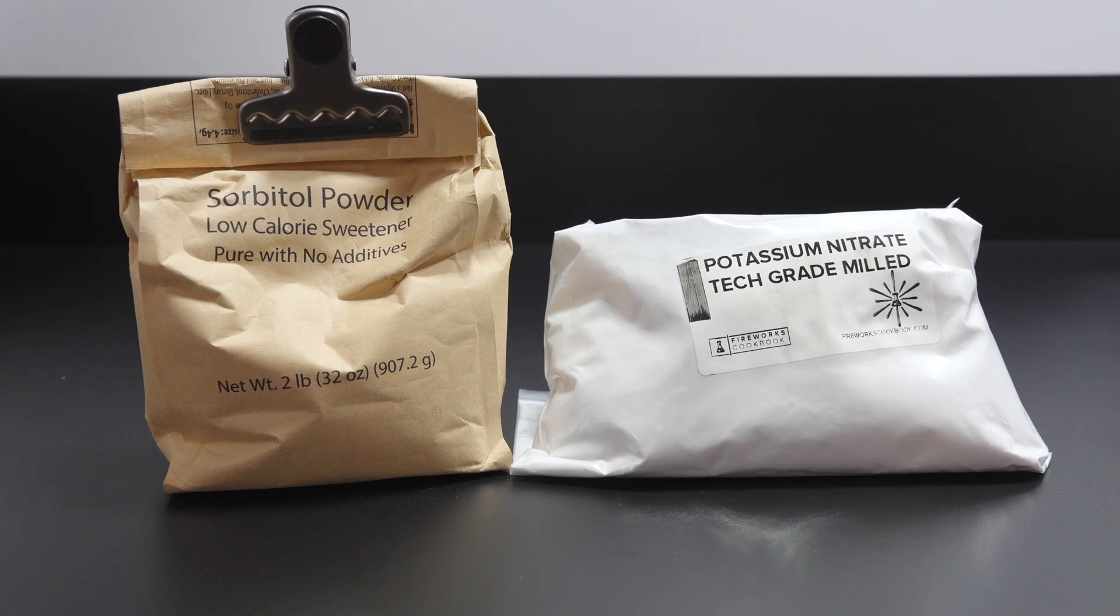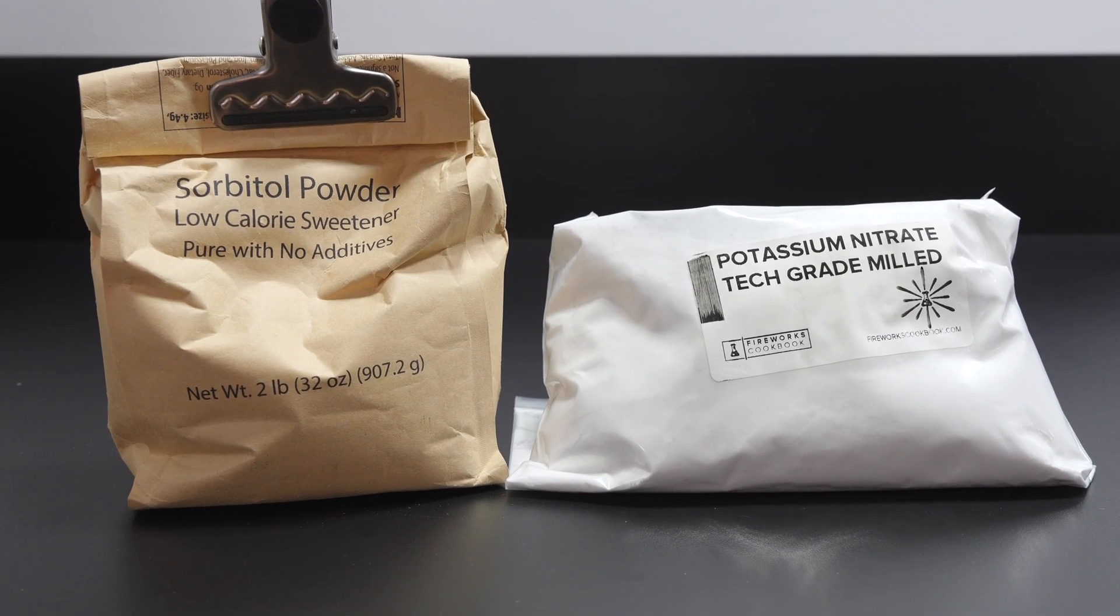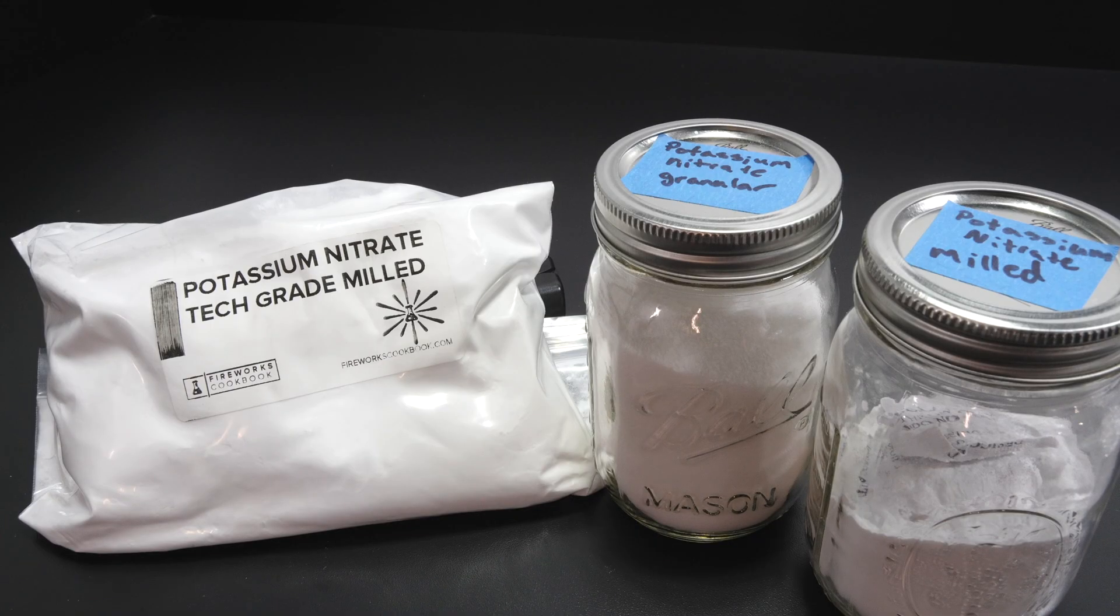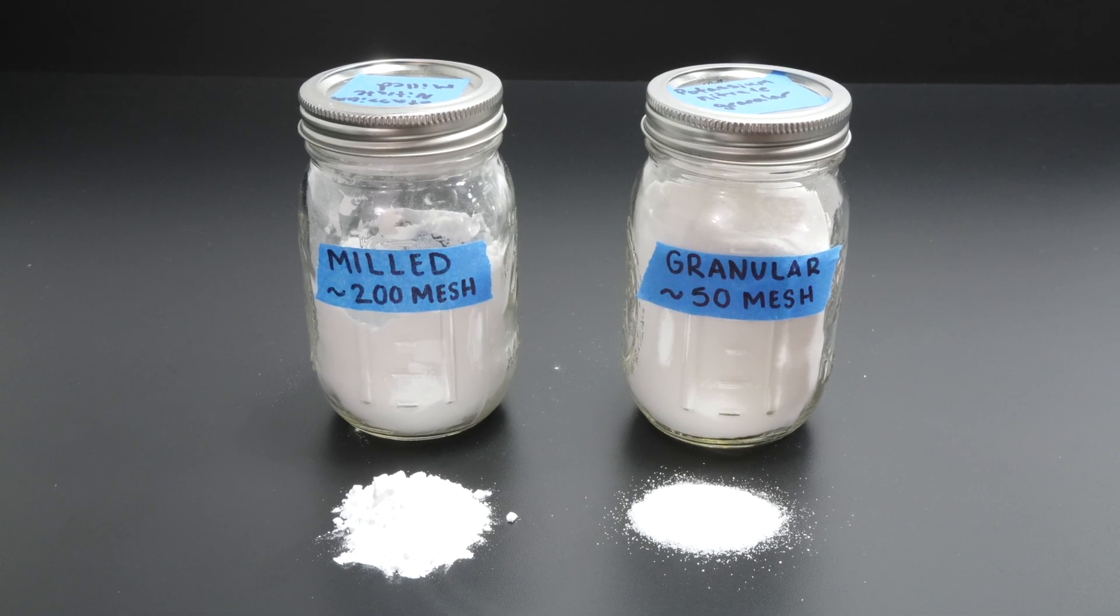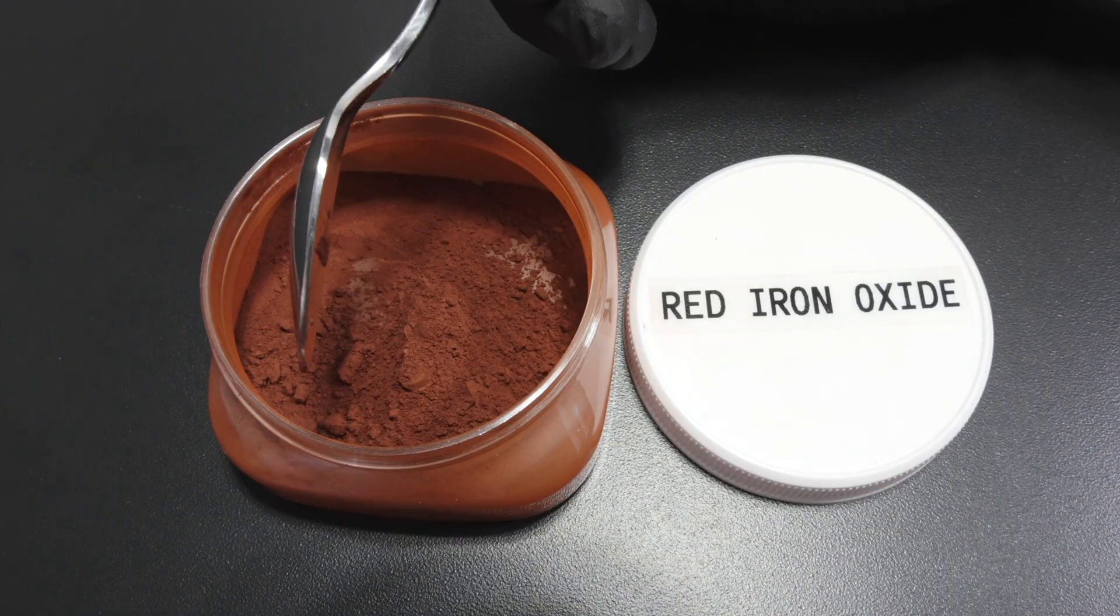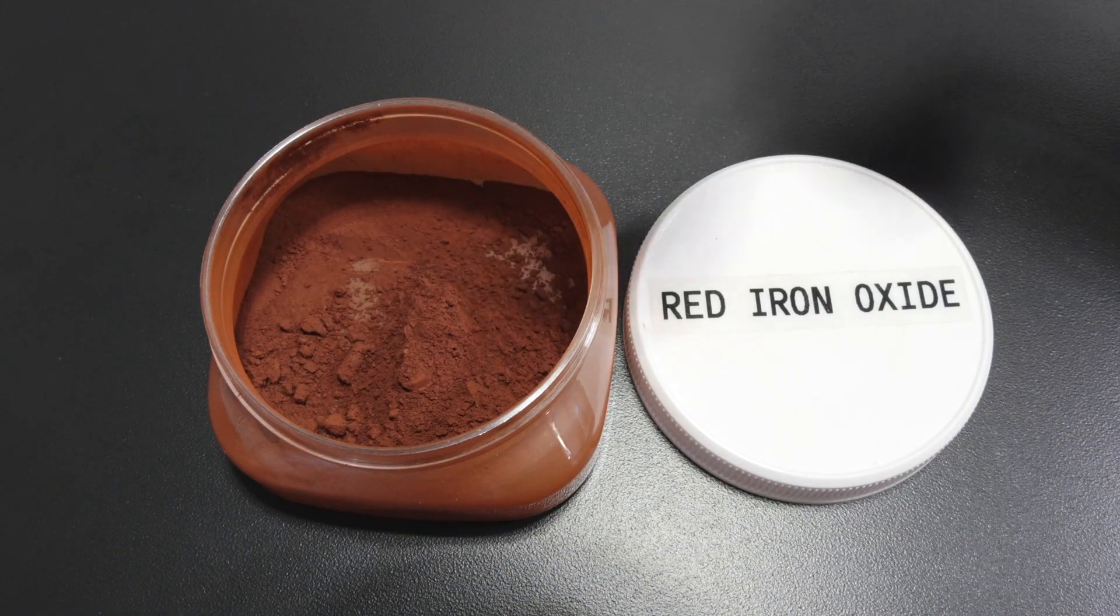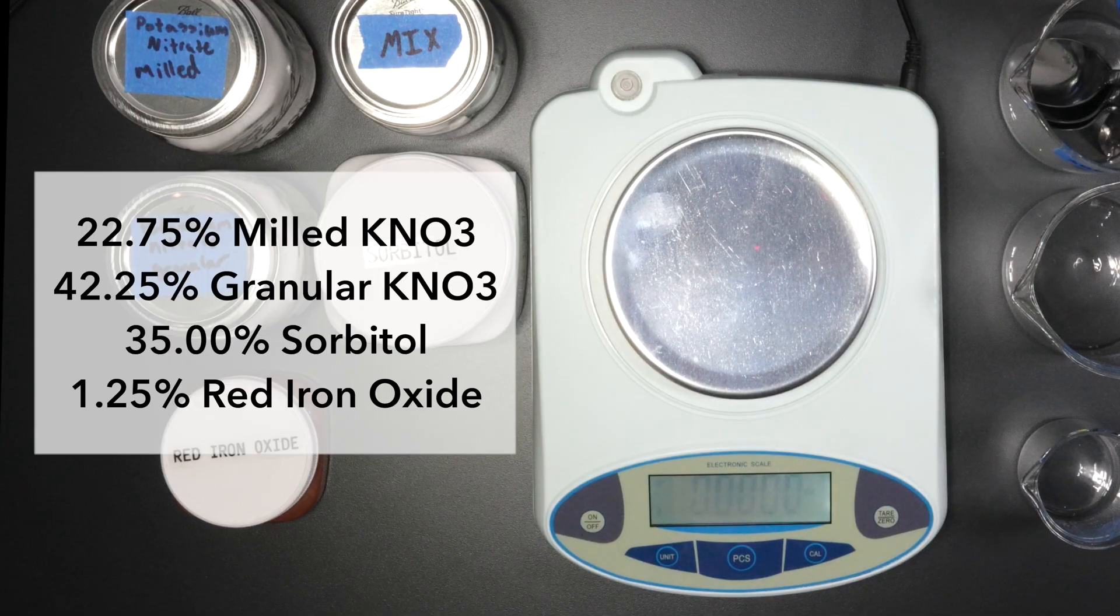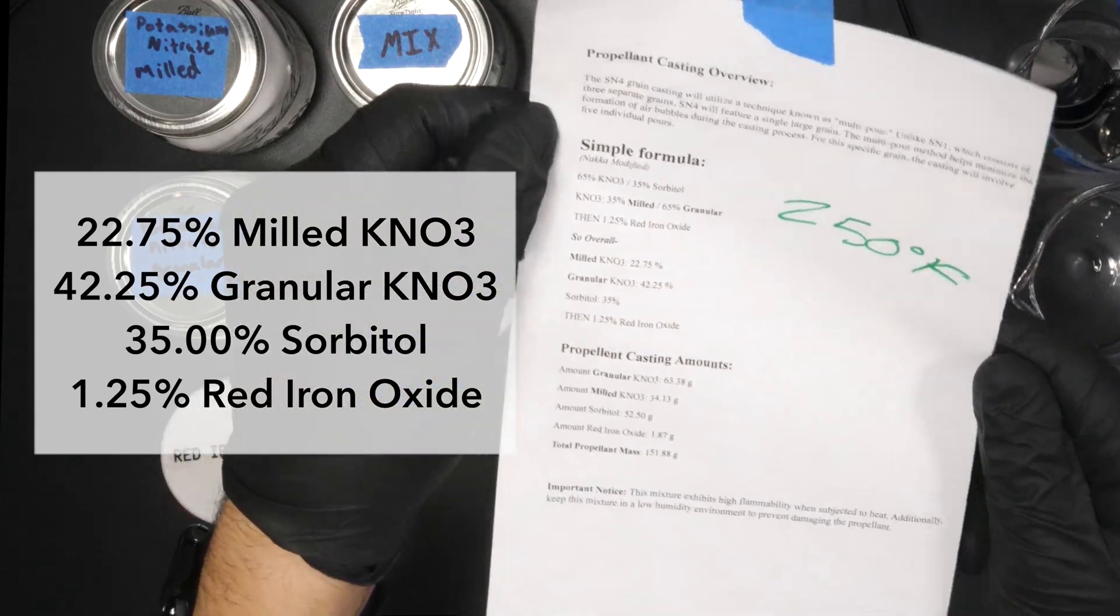The main ingredients in my propellant are sugar and potassium nitrate. For the sugar, I use sorbitol, which acts as the fuel. The potassium nitrate serves as the oxidizer, supplying oxygen to the fuel. I use two different mesh sizes of potassium nitrate to slightly improve performance. I also add small amounts of red iron oxide to help the propellant ignite more easily and slightly boost performance. Here's my propellant formula that works best for my setup.